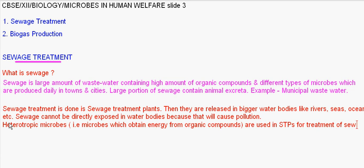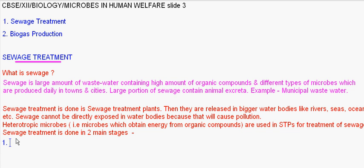Sewage treatment is done in two main stages: number one, primary treatment, and number two, secondary treatment. Primary treatment is basically physical removal. This step does not involve microbes. It is the physical removal of waste products by sedimentation and filtration.